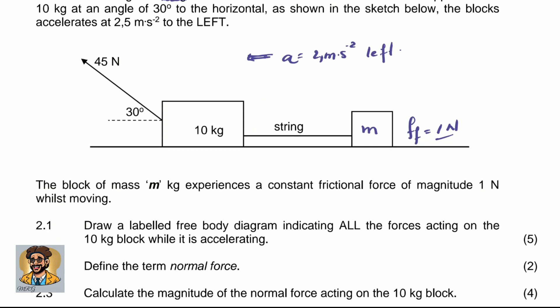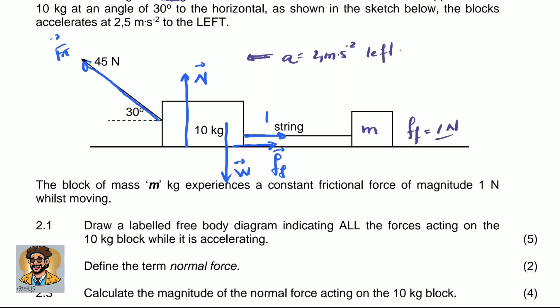Question 2.1 asks us to draw a labelled free body diagram indicating all the forces acting on the 10 kilogram block while it is accelerating. Before we draw the free body diagram, let's have a quick force diagram on the block. There is the applied force at 30 degrees to the horizontal, equal to 45 newtons. There is the normal force pointing straight upward, perpendicular to the surface. There is weight, friction, and the tension in the string.